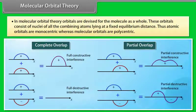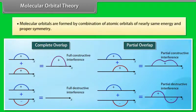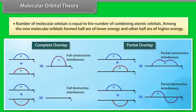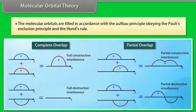In Molecular Orbital Theory, orbitals are devised for the molecule as a whole. These orbitals consist of nuclei of all the combining atoms lying at a fixed equilibrium distance. Atomic orbitals are monocentric, whereas molecular orbitals are polycentric. Molecular orbitals are formed by combination of atomic orbitals of nearly the same energy and proper symmetry. The number of molecular orbitals equals the number of combining atomic orbitals; half are of lower energy and the other half are of higher energy. The molecular orbitals are filled in accordance with the Aufbau principle, obeying Pauli's Exclusion Principle and Hund's Rule.